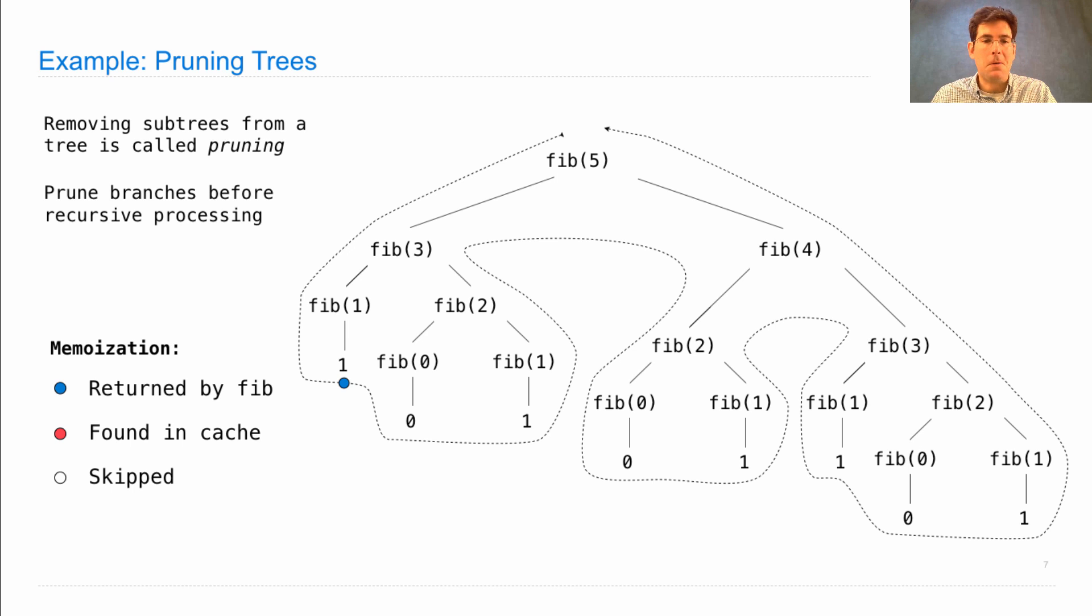So we actually had to call Fib on 1 and 0, but then subsequent calls to Fib1 were found in the cache. We actually have to call Fib on 2 and 3, but all other repeated calls to Fib2 and Fib3 are found in the cache. So the next thing that we actually have to call is Fib4.